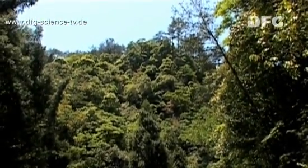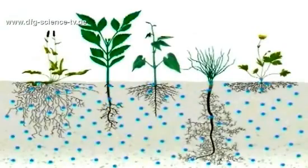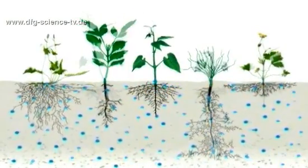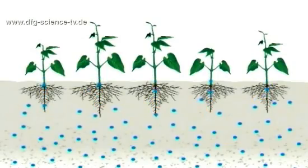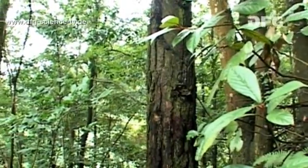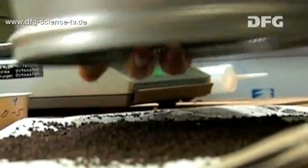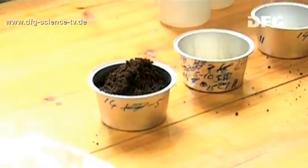Thus, they are more productive than species-poor forests. The individual nutrients can be marked using chemical markers, making it possible to track how they are taken up by the plants. Over the coming months, the researchers will observe on the basis of the nitrogen levels in this experiment whether ecosystems with a higher level of biodiversity are able to exploit nutrients more efficiently.